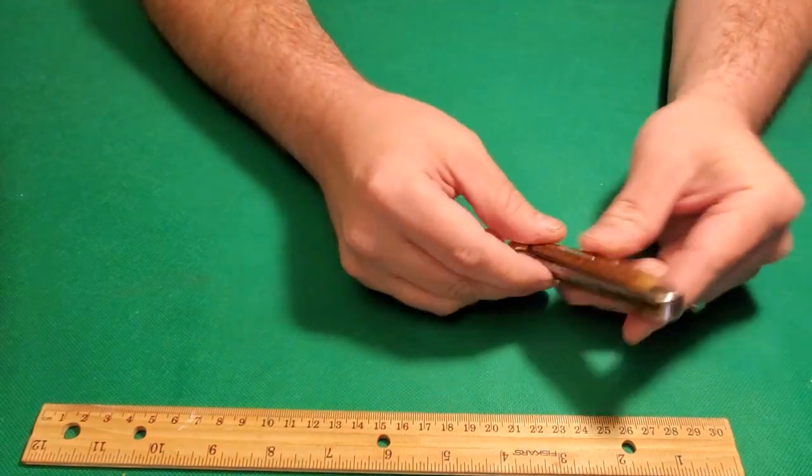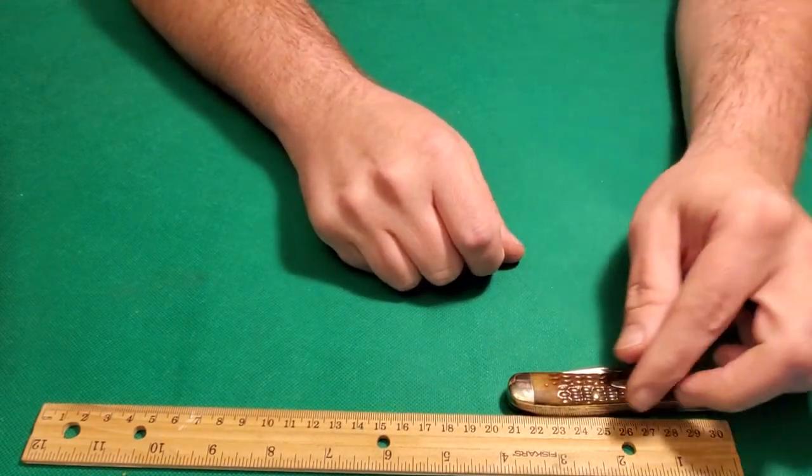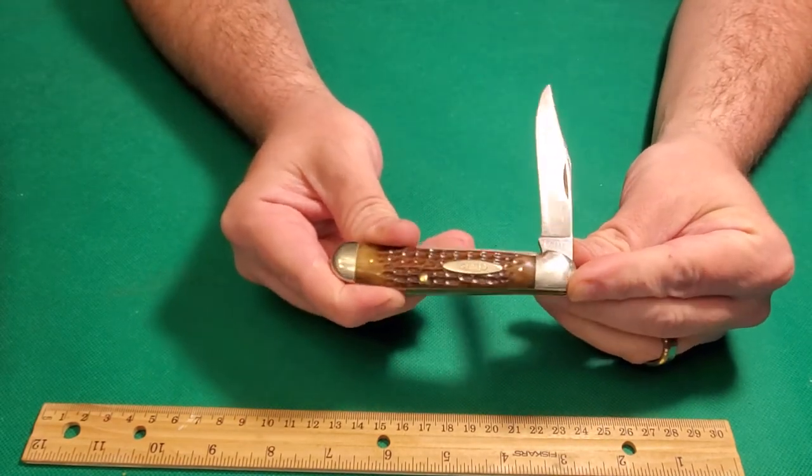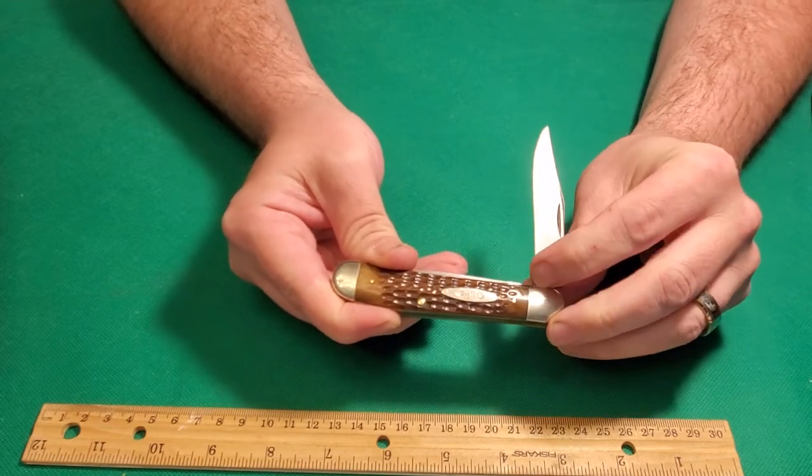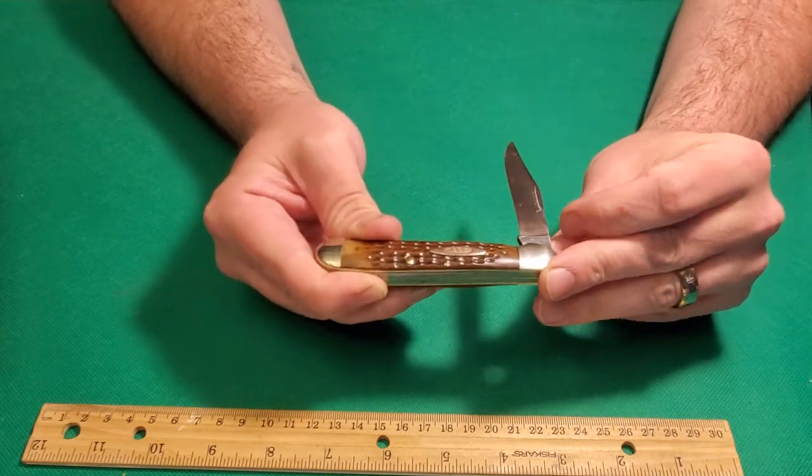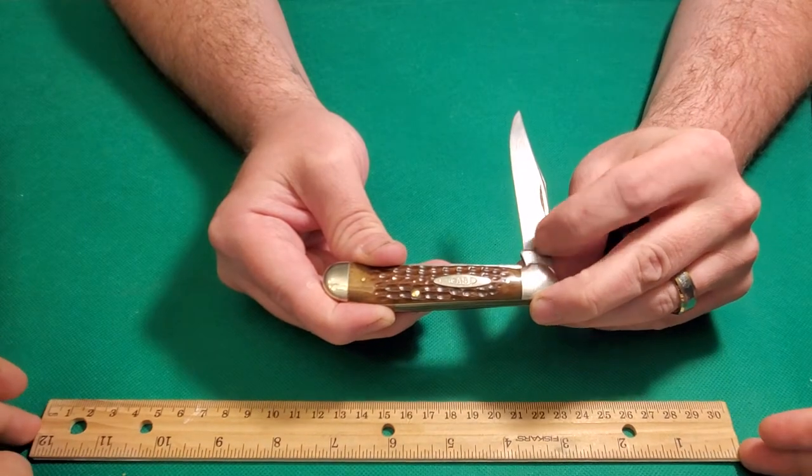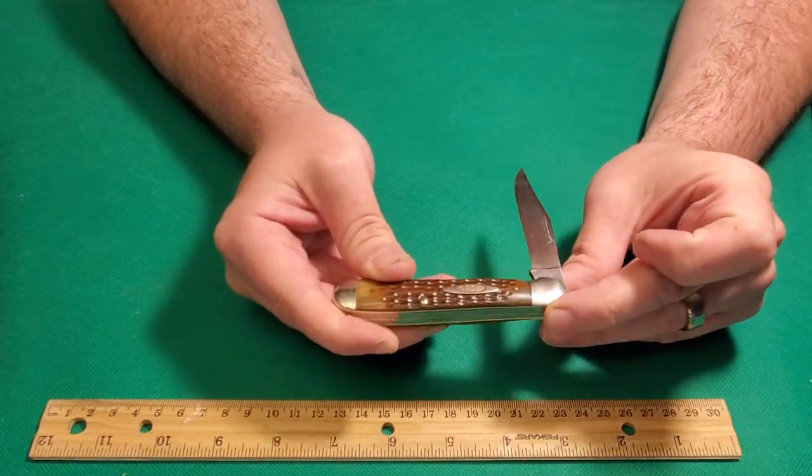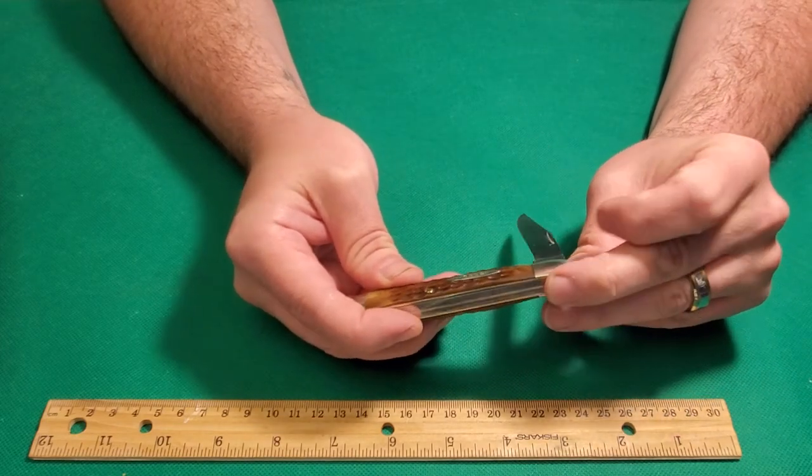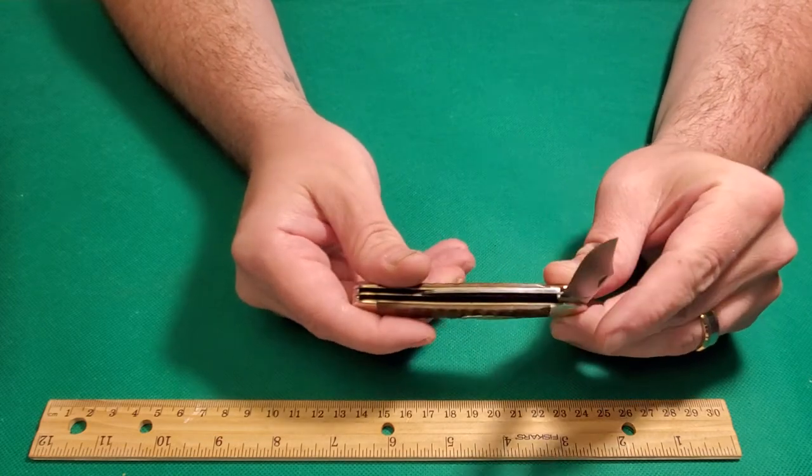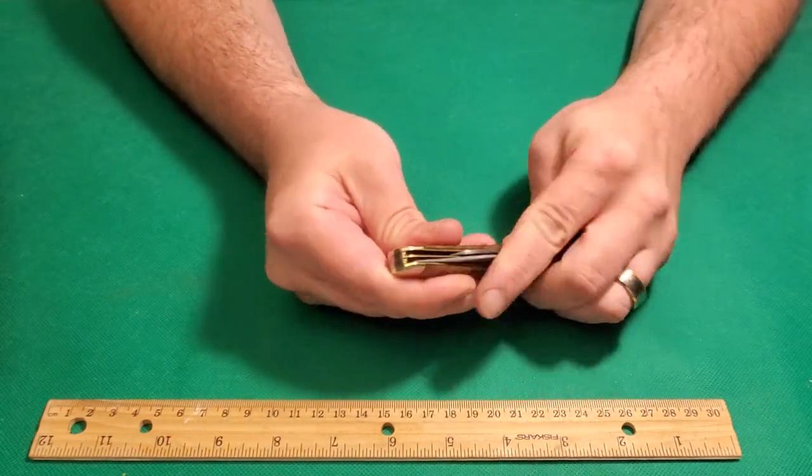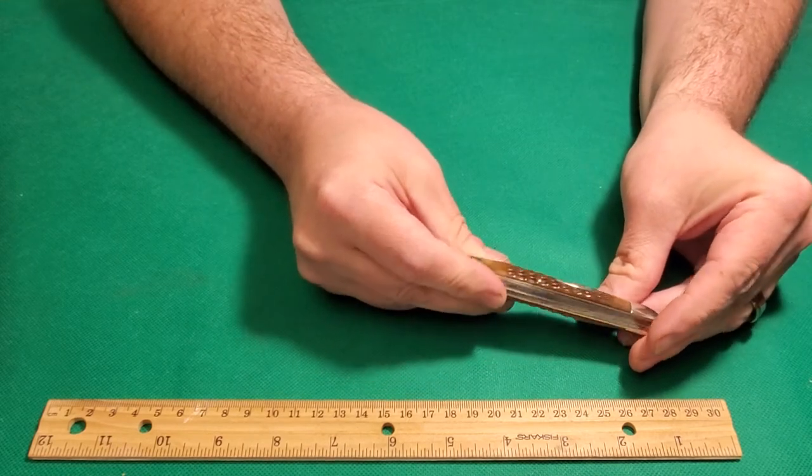Next up, one of my favorite Case patterns—a Tested era knife, 1920 to 40. You can tell by the tang stamp here. You always want to see this C circling over the top of the A and coming down. If it ever stops short, if you just see a normal-looking C and not a long-tailed C, it's going to be fake every time.